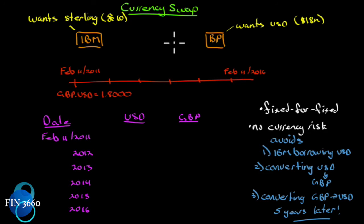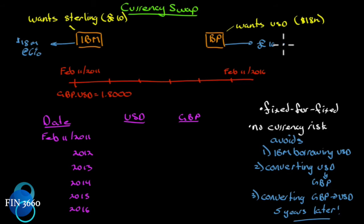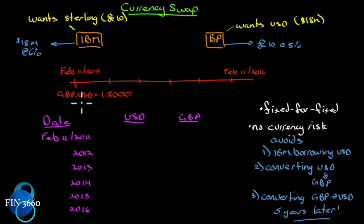So they can get together and do this: IBM will borrow in its own market — 18 million — and maybe get six percent. BP will borrow in its own market — 10 million pounds — and perhaps gets five percent. At that time the spot exchange rate is quoted as pairs.